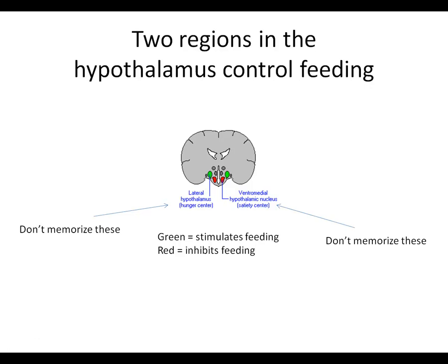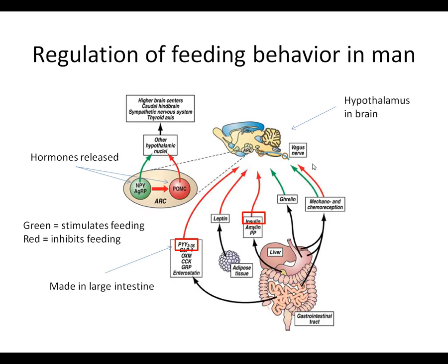What controls our feeding behavior ultimately is our brain. The part of our brain that regulates feeding is one of the most ancient parts. There are two regions in the hypothalamus that are separate: one region is our hunger center, and when it's stimulated, we feel hunger and we eat. There's a separate center — our satiation center — and when that is stimulated, we stop eating. That's our satiety center. The next question is: what stimulates those centers? All of that comes from a complex interplay of over 50 chemical and physical signals in the body, and a lot of it is an area of ongoing research.